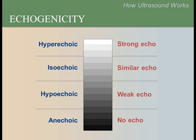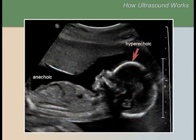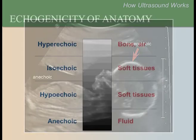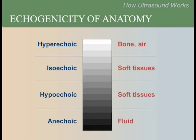We will discuss these terms more in the hands-on sessions. In this image, the amniotic fluid is anechoic and the skull is hyperechoic. This means there are no echoes from the fluid and there are strong echoes coming from the bone in the skull. Bone and air are the most echogenic — hyperechoic and appearing white. Fluids including blood, amniotic fluid, and urine in the bladder are anechoic and appear black. Soft tissue will appear either isoechoic or hypoechoic.